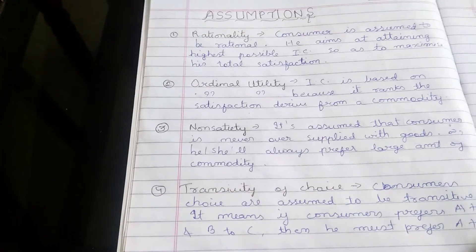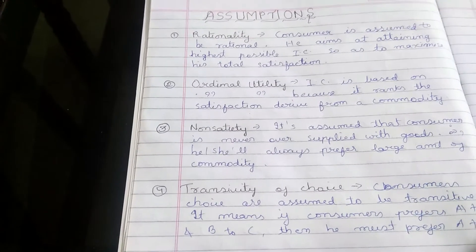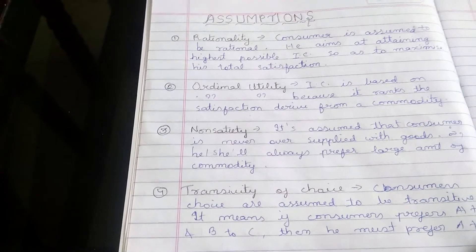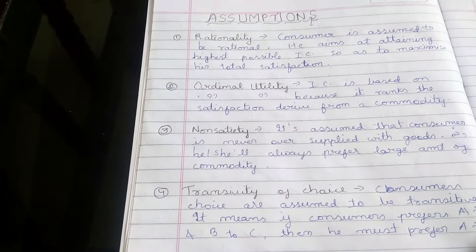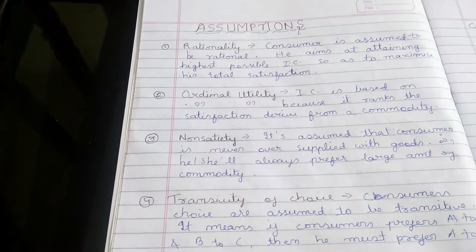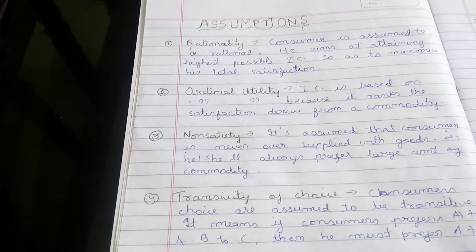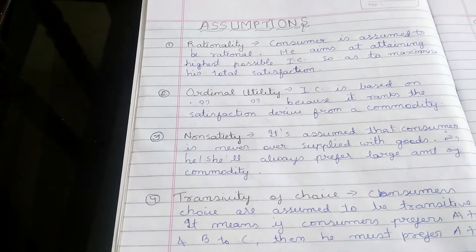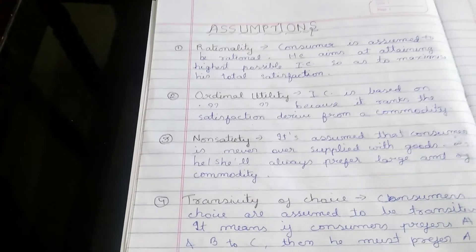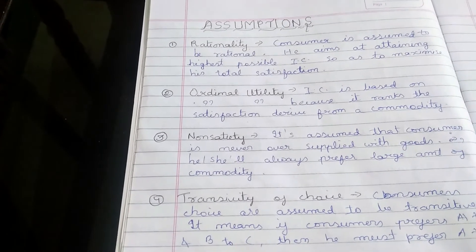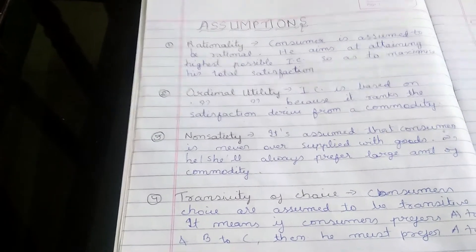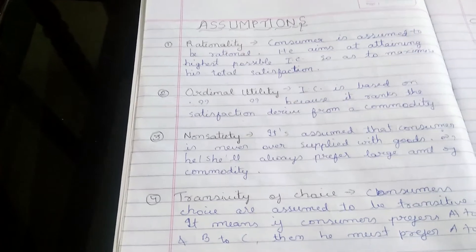Practically, measuring satisfaction in numbers is not correct, but you can do it in rank form. If you consume two cups of coffee, you can rank the satisfaction from the first cup and the second cup. Indifference curve is based on Ordinal Utility, which ranks the commodities.